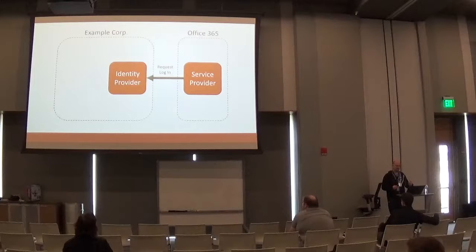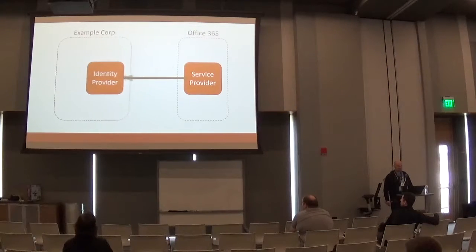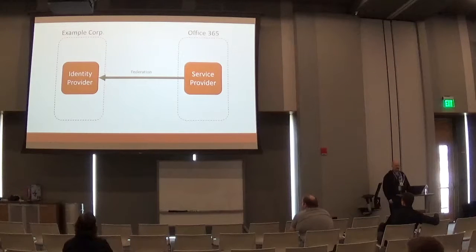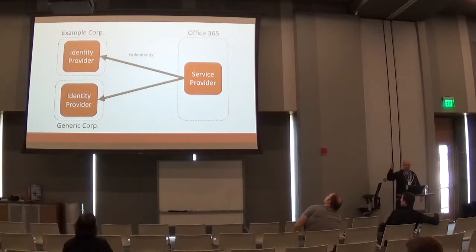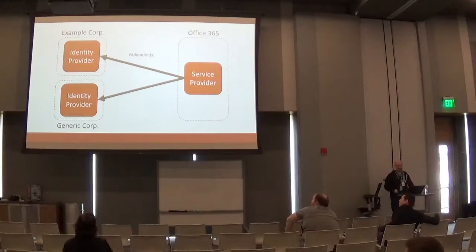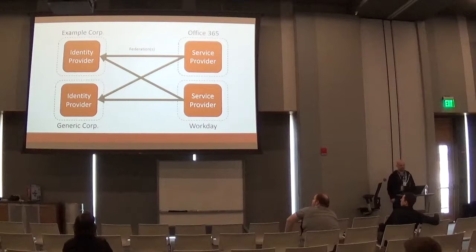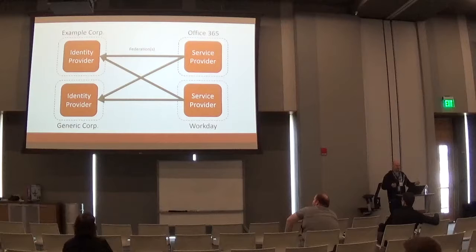They don't authenticate your users — you authenticate them. Your identity provider ultimately logs your user in. This cross-organizational linkage is known as a federation. Office 365 obviously has many of these federations — one between Example Corp and another between Generic Corp. Each one of these individual entities is a federation in itself. You might use multiple service providers at your organization, so this becomes a many-to-many relationship, with individual federations between each organization and the respective service providers they use.